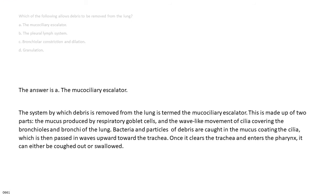The answer is A, the mucociliary escalator. The system by which debris is removed from the lung is termed the mucociliary escalator. This is made up of two parts: the mucus produced by respiratory goblet cells, and the wave-like movement of cilia covering the bronchioles and bronchi of the lung.